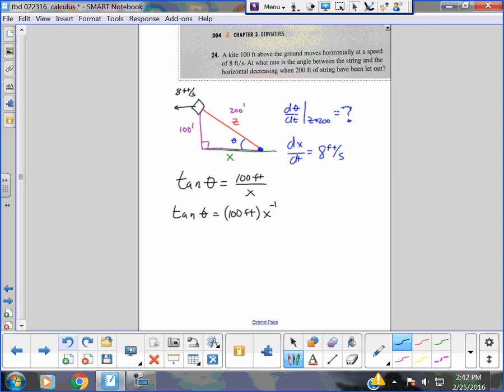What's the derivative of tangent? Secant squared. Secant squared theta, dθ/dt. The derivative of 100 feet, so I think it's negative 100 feet times X to the negative 2 dx/dt.